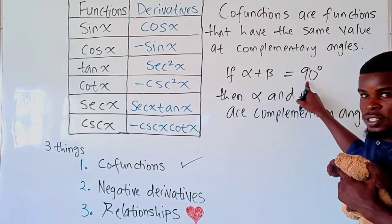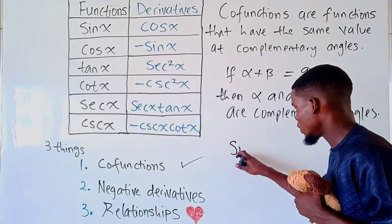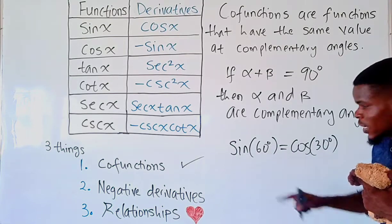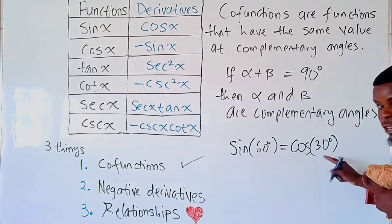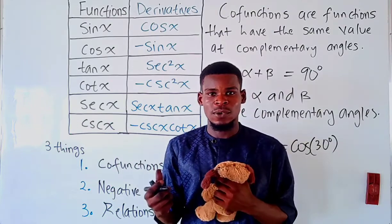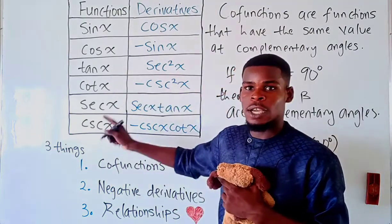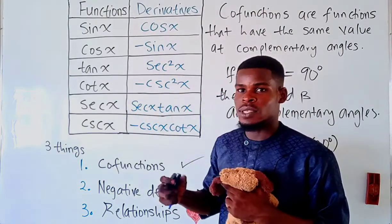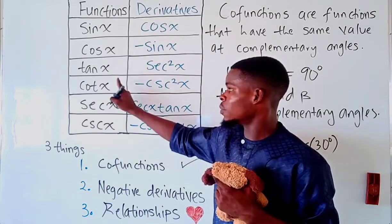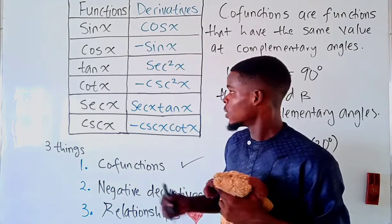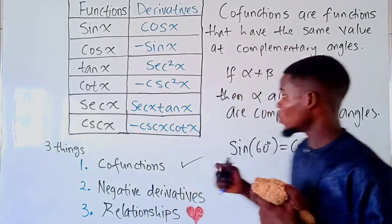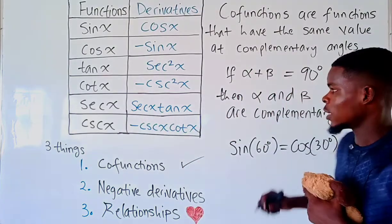For example, 60 plus 30 degrees gives us 90 degrees, so 60 and 30 are complementary angles. That means sine of 60 degrees is the same thing as cosine of 30 degrees, because sine and cosine are co-functions. Similarly, tangent of 60 degrees equals cotangent of 30 degrees, and secant of one angle equals cosecant of the complementary angle.